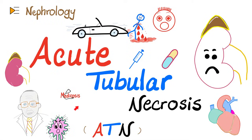Hey guys, it's Medicosis Perfection — that is where medicine makes perfect sense. Let's continue our nephrology playlist. In previous videos, we talked about acute kidney failure, also known as acute kidney injury or acute renal insufficiency, which could be caused by one of three categories of diseases: number one, pre-renal azotemia; number two, which is today's topic, intra-renal azotemia, a common cause of which is acute tubular necrosis; or three, which is the topic of the next video, post-renal azotemia. But today we're talking about acute tubular necrosis.